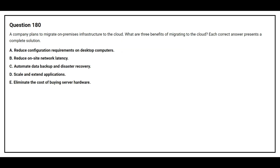Question 180. A company plans to migrate on-premises infrastructure to the cloud. What are three benefits of migrating to the cloud? Option A: Reduce configuration requirements on desktop computers. Option B: Reduce on-site network latency. Option C: Automate data backup and disaster recovery. Option D: Scale and extend applications. Option E: Eliminate the cost of buying server hardware. The correct answers are Options C, D, and E.